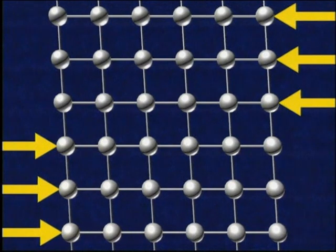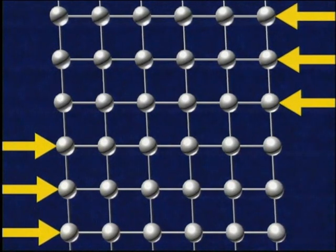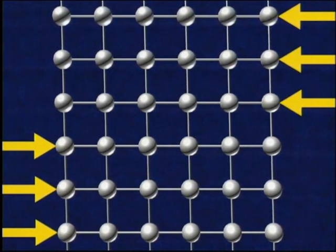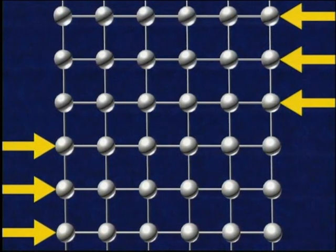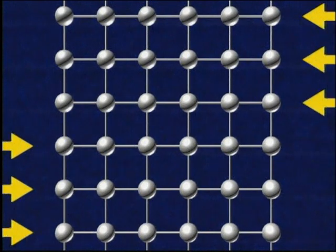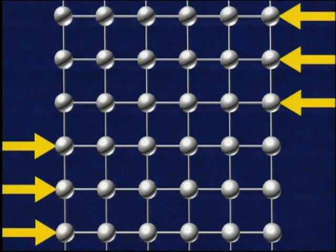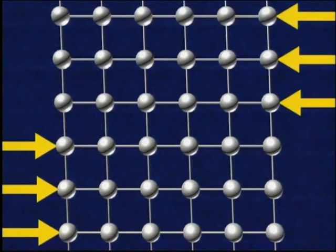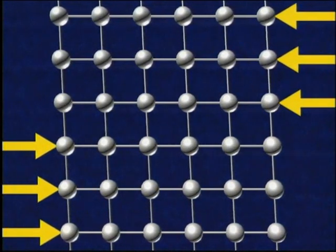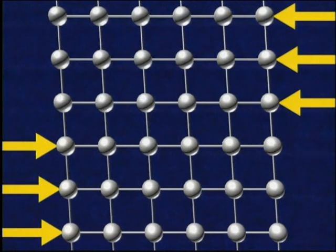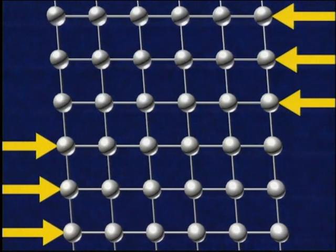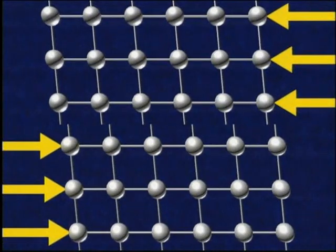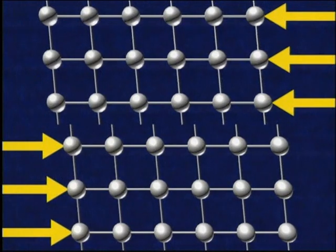When the load is removed, the bonds pull the atoms back into position. If the applied force exceeds the metal's yield strength, those electromagnetic bonds will break, causing permanent stretching or deformation.